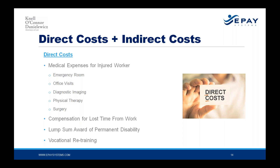Talking about costs, we have direct costs and indirect costs of a workers' compensation injury. A direct cost is the medical expense services themselves for the injured worker, covering emergency treatment, office visits, imaging, surgery, and therapy. Then we have TTD — compensation for lost time from work. And we have permanent partial disability, the lump sum or trial award at the end of the case, plus vocational retraining if necessary. Those are the main direct costs.